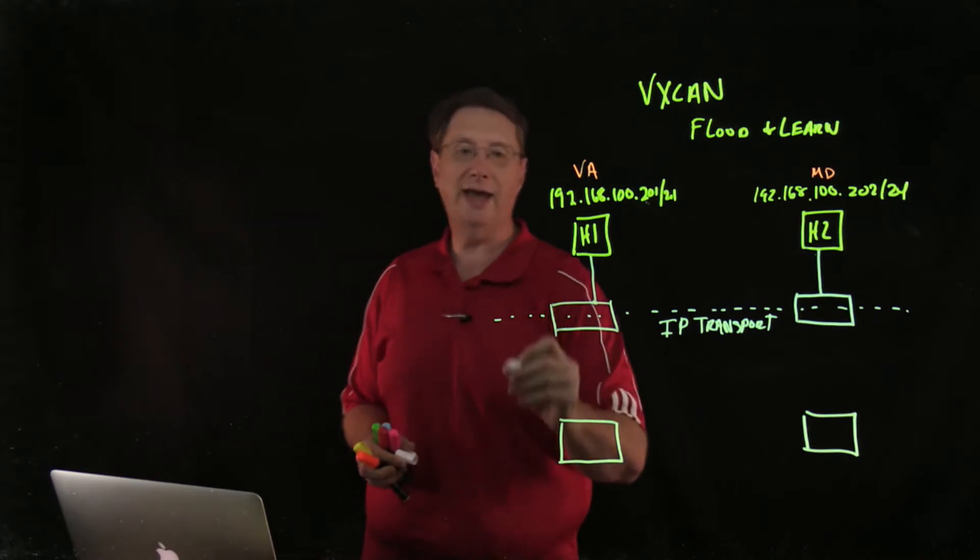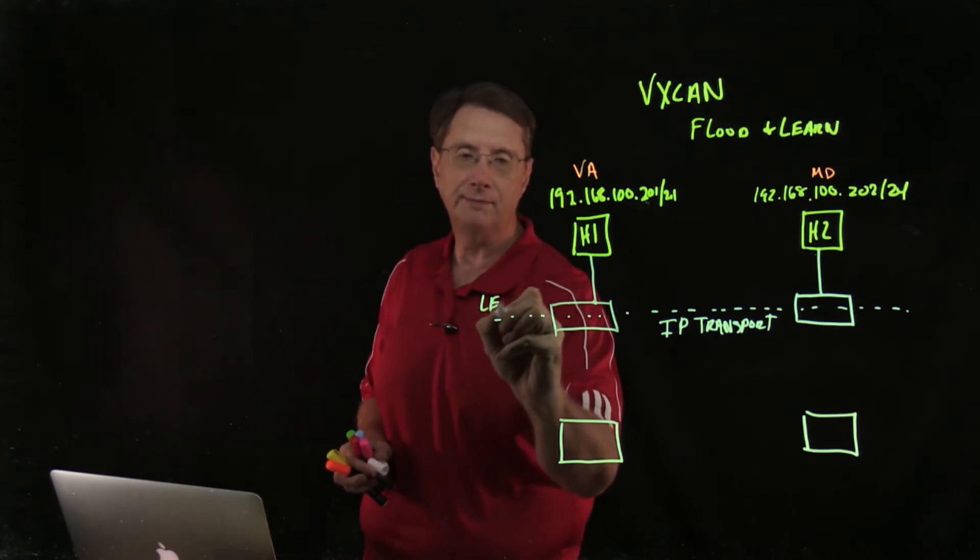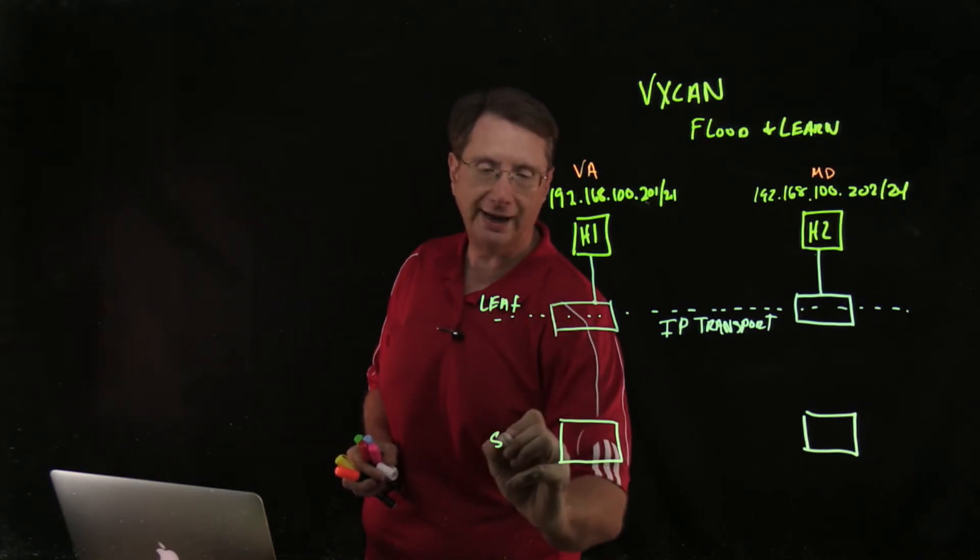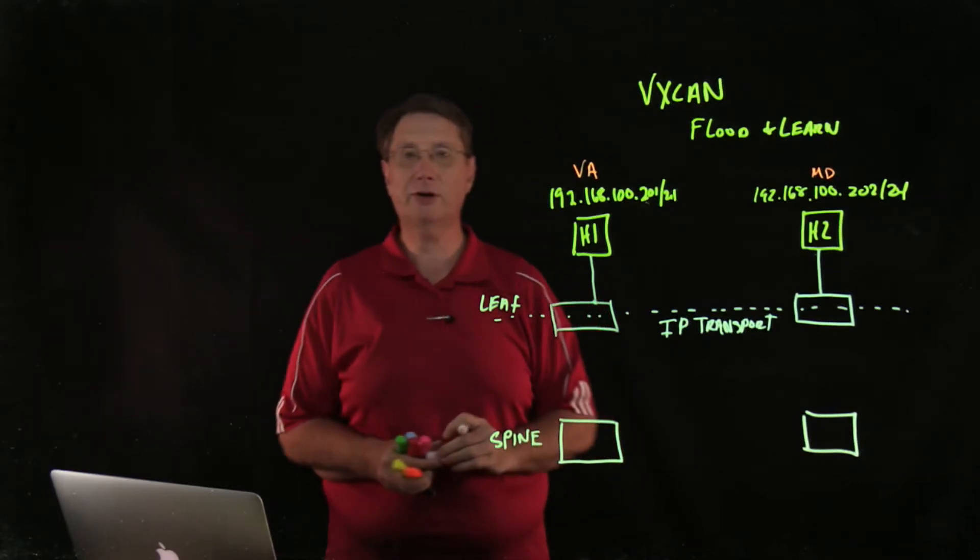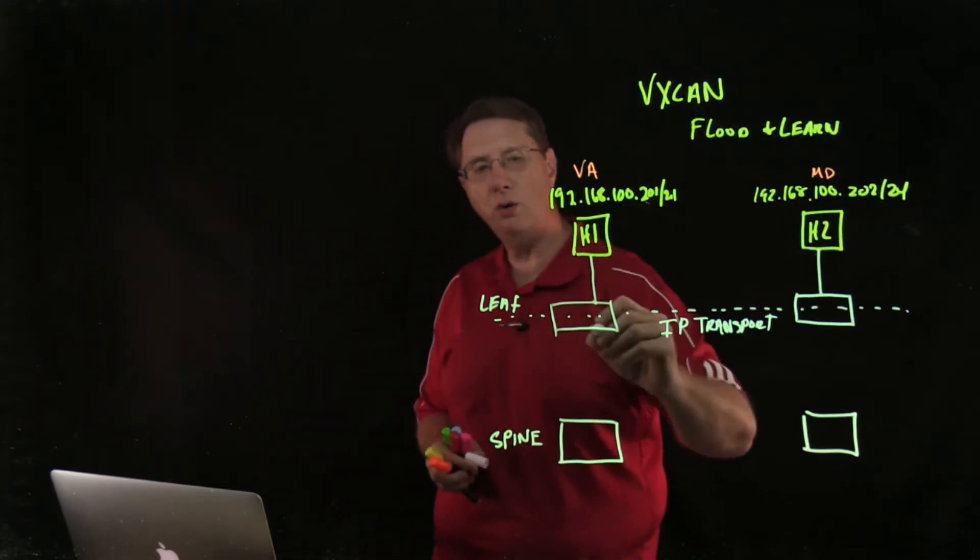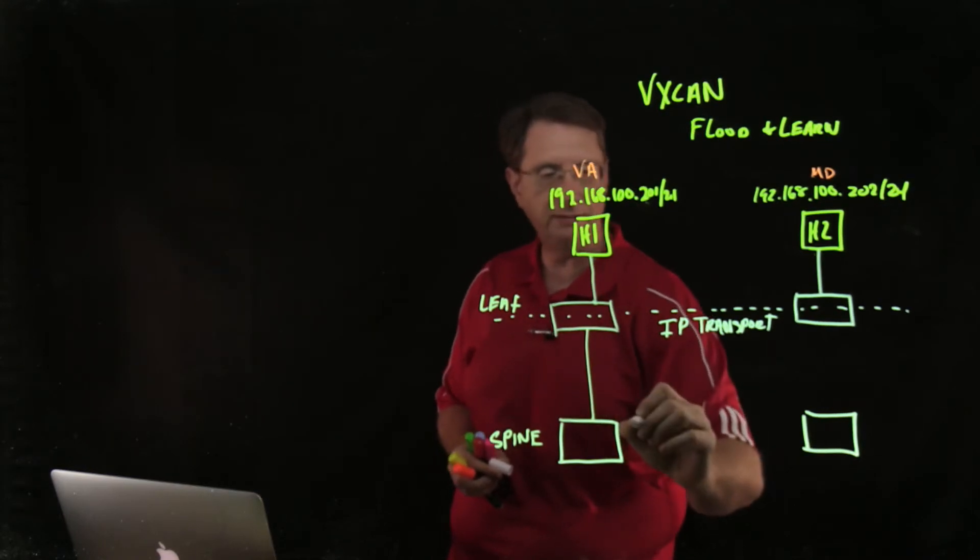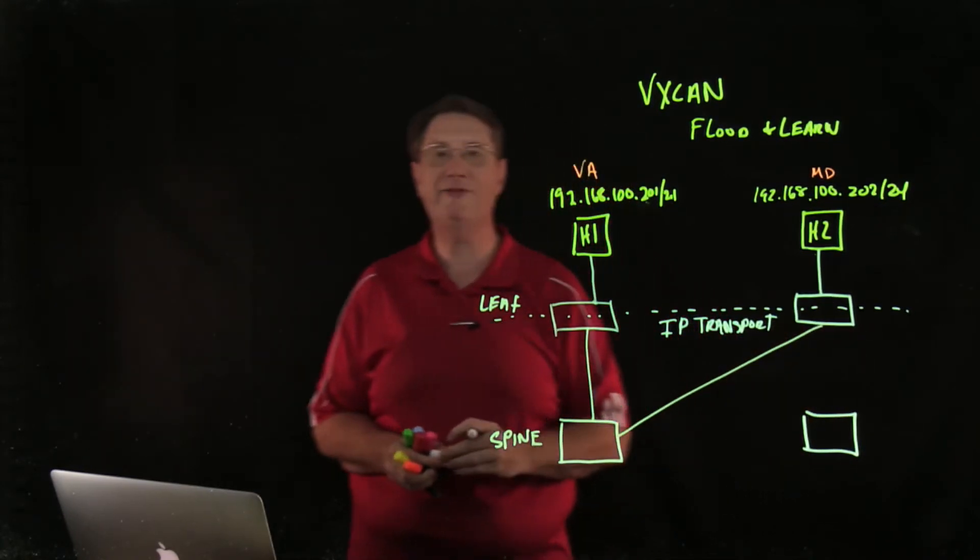CLOS architecture is a leaf-spine architecture that allows me to create an environment where no leaf is going to be more than two hops away from any other leaf.